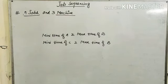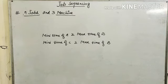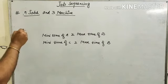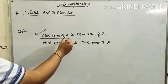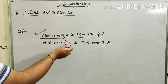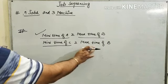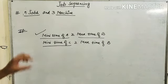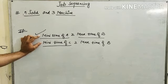In this particular method, for this type of problem, there is no method that exists by which we can directly find the solution. So for this, we can use the previous method — that is, the n jobs and 2 machine method. We have to convert this particular problem, where 3 machines exist, into the 2 machines problem.